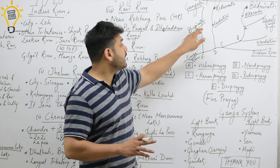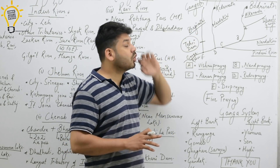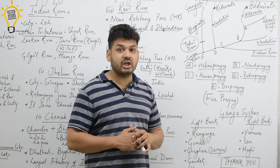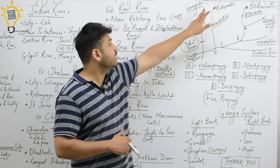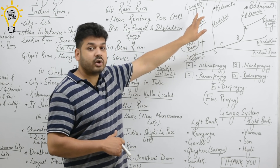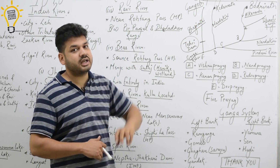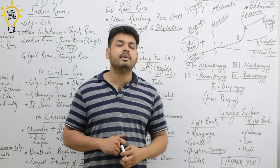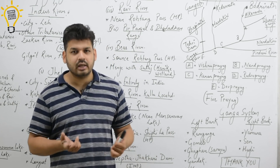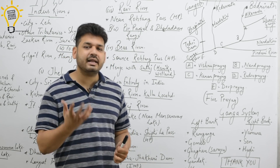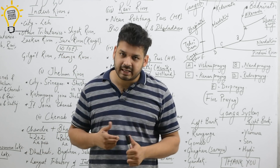Regarding Bhagirathi: Bhagirathi originates from Gangotri Glacier. Sometimes questions are asked about Bhagirathi — it is considered the main stream and is often called Ganga before the Dev Prayag confluence.